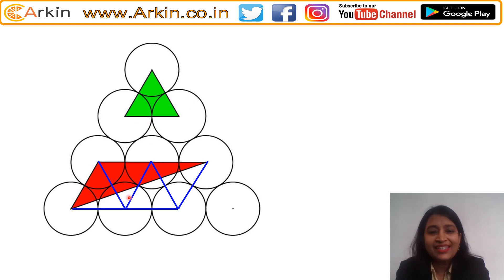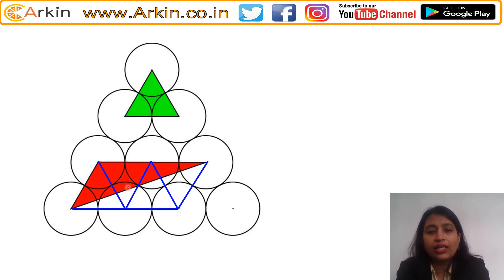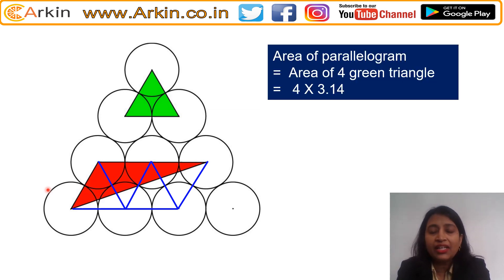Now you can see: if we make this, we get a parallelogram shape. This parallelogram is made up of how many triangles? One, two, three, four — and all these triangles are the same equilateral triangle. We can see a clear relation: the shape whose area is asked is half of this parallelogram, and this whole parallelogram consists of four such equilateral triangles whose area is given. So now we get the idea of how to solve this.